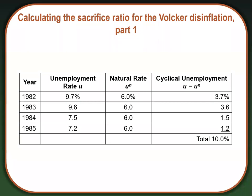In 1982, the unemployment rate was quite high — nearly 10%. If we assume the natural rate of unemployment was 6%, that leaves a cyclical unemployment rate of 3.7%. By 1985, the inflation rate had gone down quite a bit, but we still had 1.2 percentage points of cyclical unemployment. We can take this data and see if Volcker actually got people to revise their inflation expectations by calculating the sacrifice ratio.